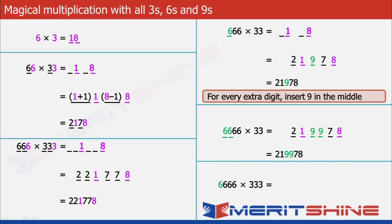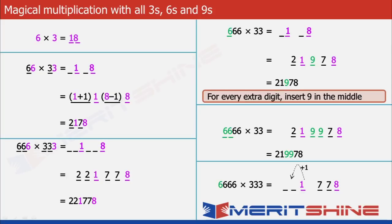Let us take one more example: 6666 × 333. Now we will proceed by thinking of it as 666 × 333. So first let us put down 18 and insert 2 blanks each to the left of 8 and 1. We will now fill the blanks to the left of 8 with 1 less than 8, so both blanks get 7. The blanks to the left of 1 each get 1 more than 1, so both get 2.